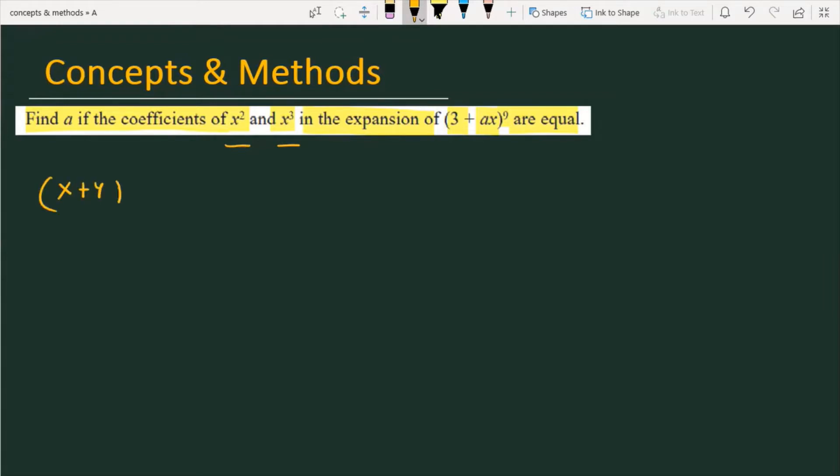The general expansion is: (x + y)ⁿ = ⁿC₀ xⁿ y⁰ + ⁿC₁ xⁿ⁻¹ y¹ + ⁿC₂ xⁿ⁻² y² + ... This is the binomial expansion formula.